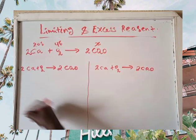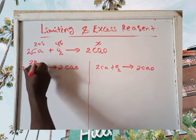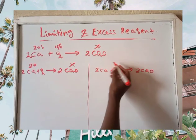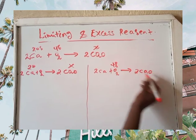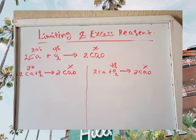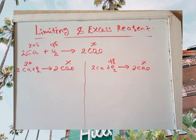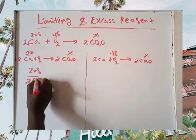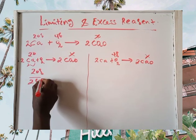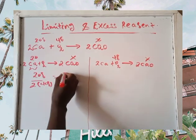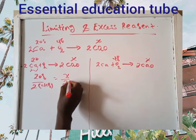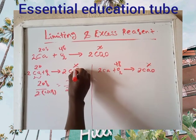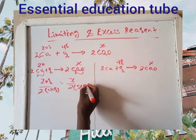First, using 20 grams of calcium metal: how many grams of calcium oxide will be produced? 20 grams of calcium metal divided by the molar mass of calcium metal, which is 40 grams per mole, is equal to x over 2 times the molar mass of calcium oxide, which is 56 grams per mole.